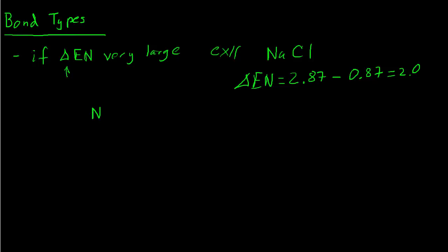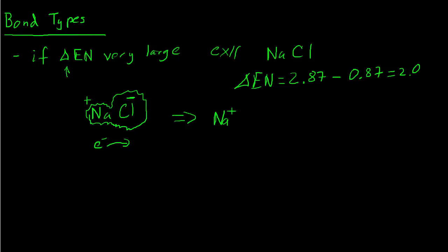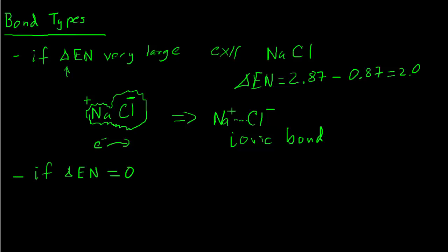When the difference is very large, as in NaCl, we imagine that the electron density gets shifted completely to the chlorine in the tug-of-war. The chlorine ends up with excess negative charge and the sodium — stripped of its valence electrons — ends up with a positive charge. This really looks like a sodium cation attracted through electrostatic force to the chloride ion. That's what we call an ionic bond: when the electronegativity difference is really great, we essentially completely transfer an electron.